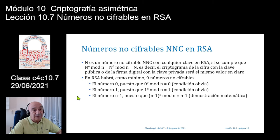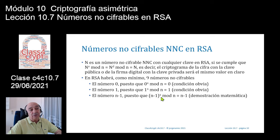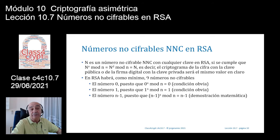Luego hay otra condición bastante obvia que sí requiere una pequeña demostración matemática, que aquí no veremos, que es el N-1. N-1 elevado a X, la clave pública o la clave privada reducida a módulo N, siempre sale el N-1. Estos tres números son números que se pueden saber con claves pequeñas o con claves inmensamente grandes de 2048 bits, y sabemos que van en claro.